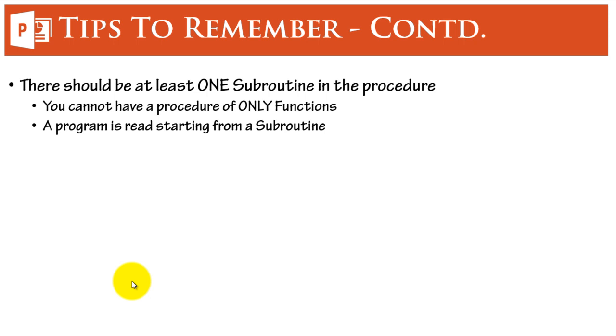There should be at least one subroutine in the procedure. This is because a procedure cannot start with a function. It has to be initiated from your subroutine and you can call other functions or other subroutines from that one subroutine. So you cannot have a procedure having only functions. You need to have at least one subroutine from which the program starts reading that procedure.